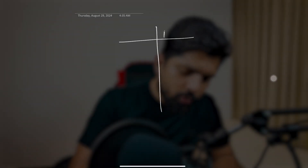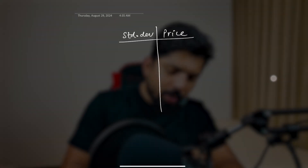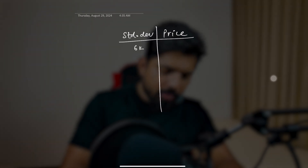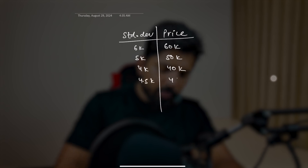A quick recap of the previous session. Let's say we are creating an algorithm to predict stock prices — for example, BTCUSD. The price is the output column, also known as the dependent variable. The input can be anything — your index, standard deviation, RSI, anything. For now, let's say we take standard deviation. If the standard deviation is 6k, the predicted price could be 60k; if 5k, then 50k; for 4.5k it would be 45k.